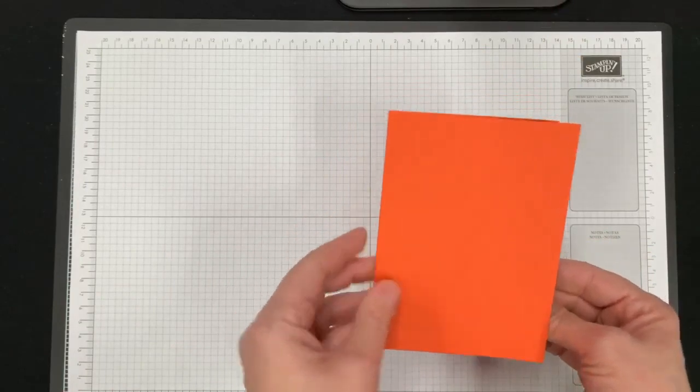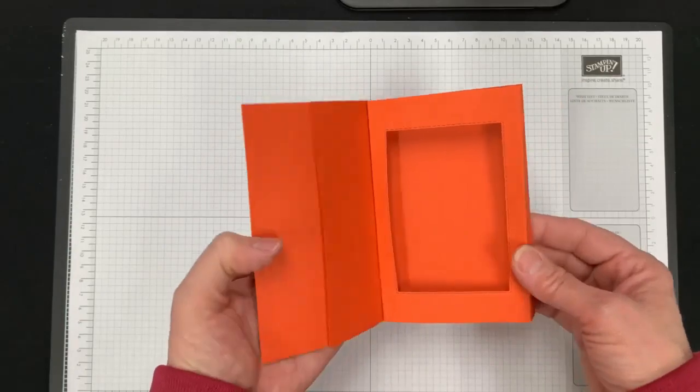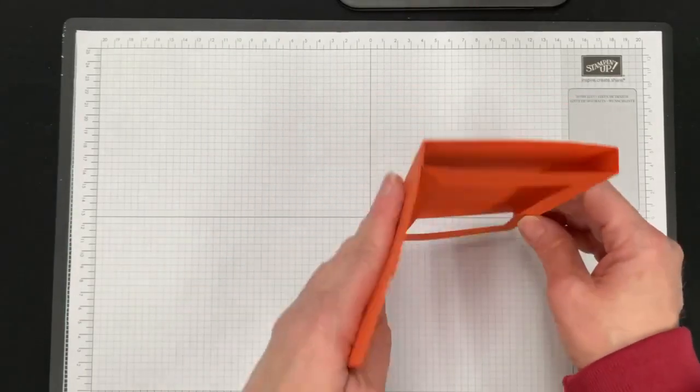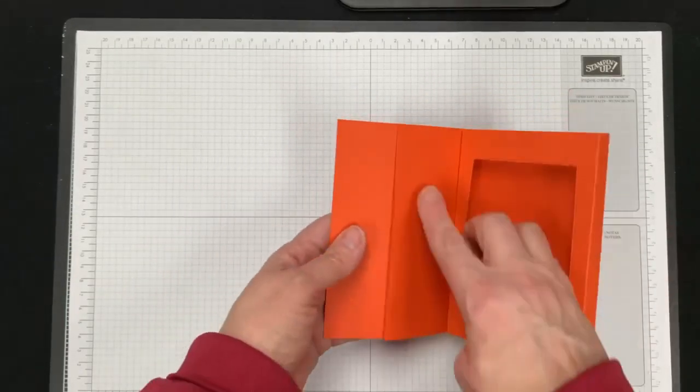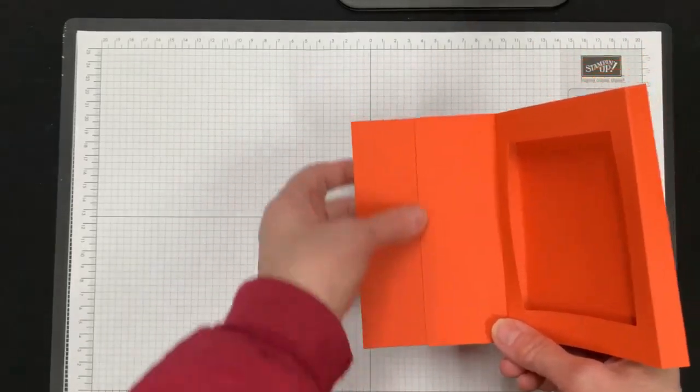And then if it overhangs at the bottom or whatever, you can just trim that off with your scissors. But it should line up pretty well. So you've got your front piece and whatever color you're using. The inside base opens like this and you've got your shadow box card. Now I did not like this seam here. There's no way around that. These two pieces are glued together. I did not like that seam, so I covered mine up with some pretty paper.